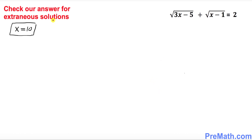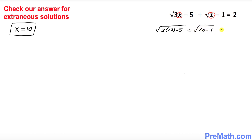Finally, we check x equals 10 for any extraneous solution. Replace x with 10 in the original equation: square root of (3 times 10 minus 5) plus square root of (10 minus 1). Is the left-hand side equal to the right-hand side? Let's simplify: 30 minus 5 is 25, and 10 minus 1 is 9.